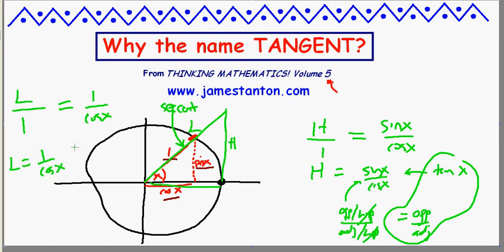So L turns out to be 1 over cosine of x. And we'll call this secant of x. Secant of x there. Off we go.